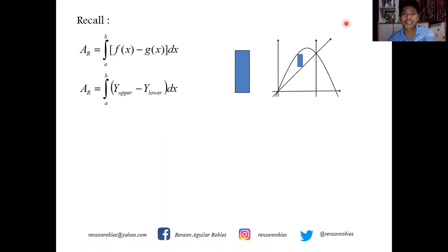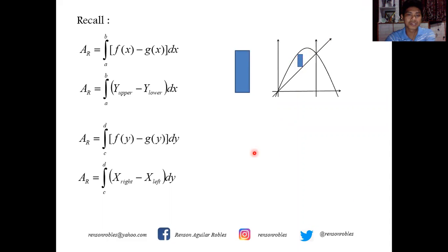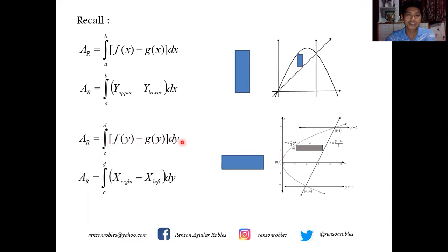If we take a vertical element, we use the formula: integral of f(x) minus g(x) dx, evaluated from a to b — that is y-upper minus y-lower dx, evaluated from a to b. If we take a horizontal element, we use the formula: f(y) minus g(y) dy, evaluated from c to d — that is, x-right minus x-left, evaluated from c to d.